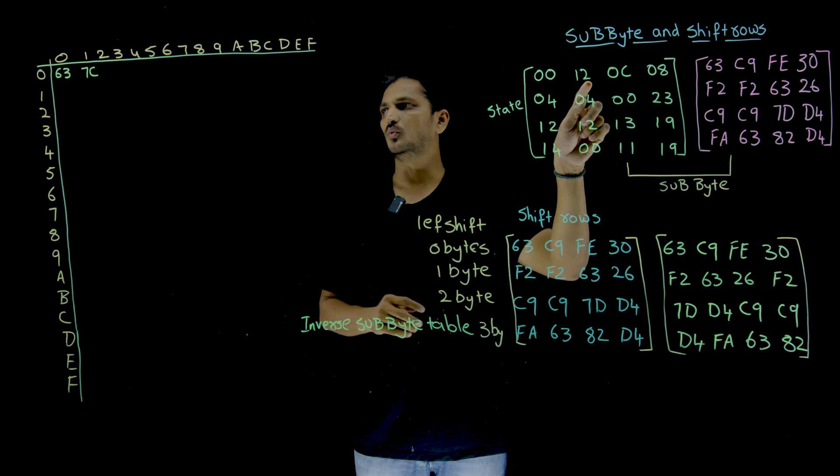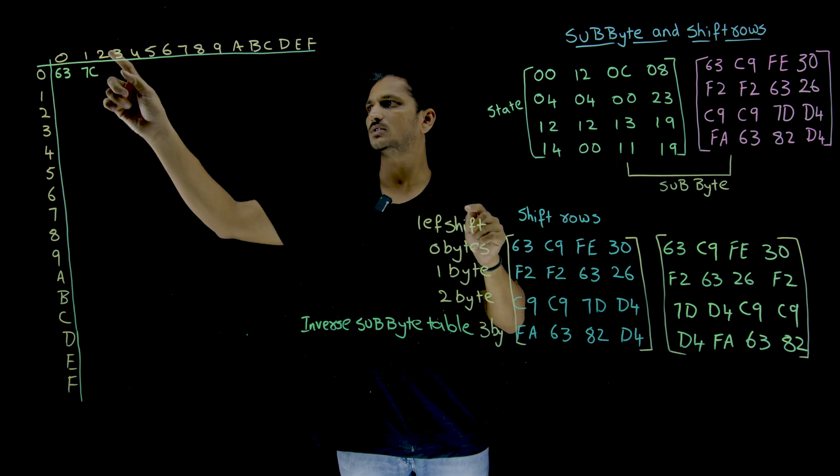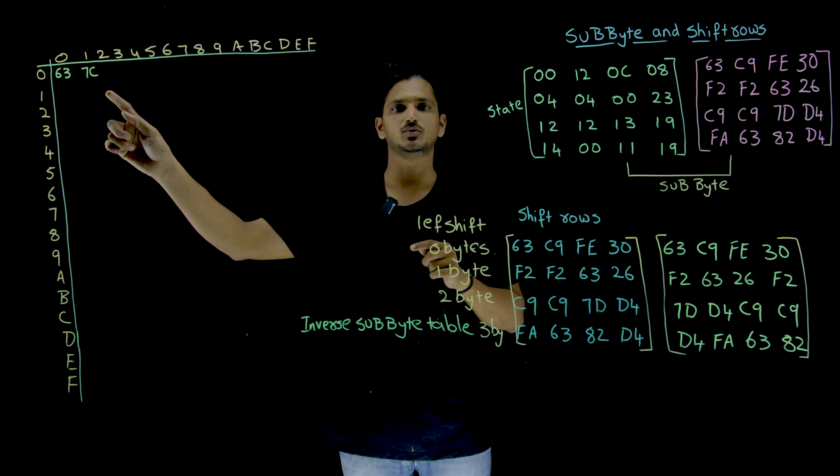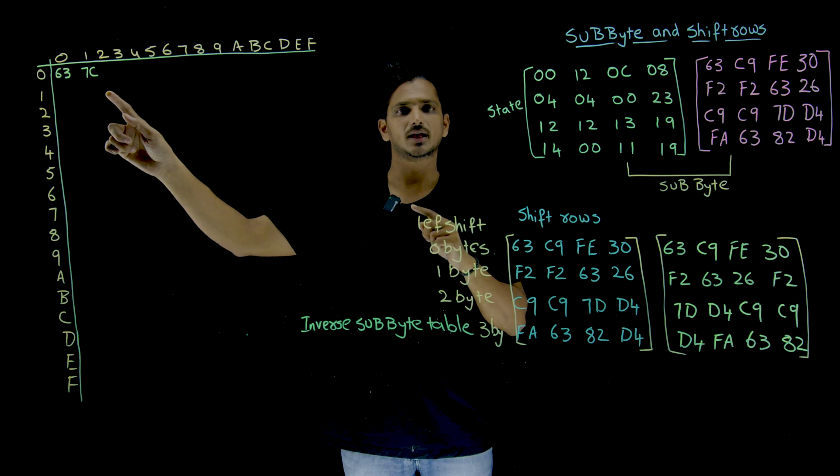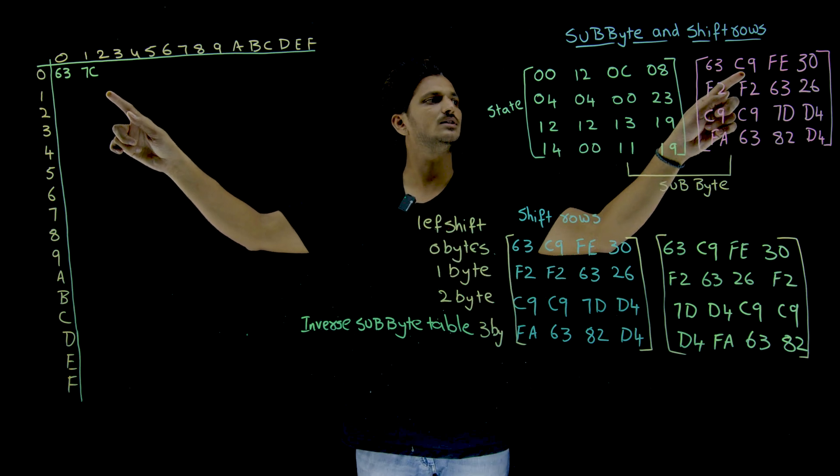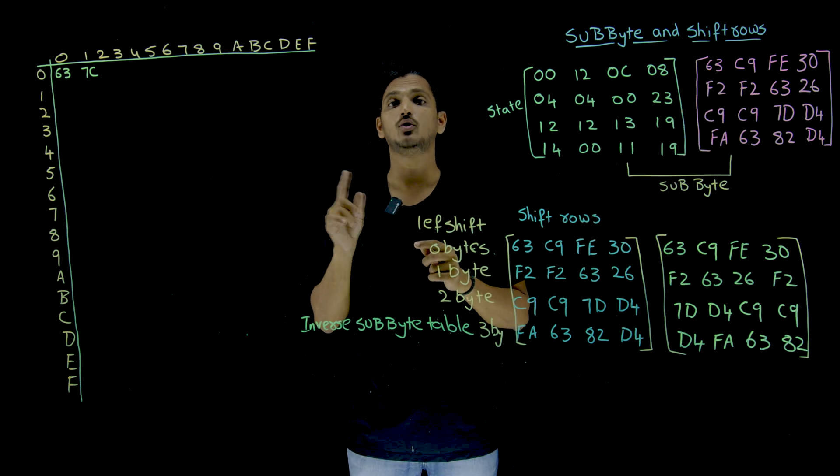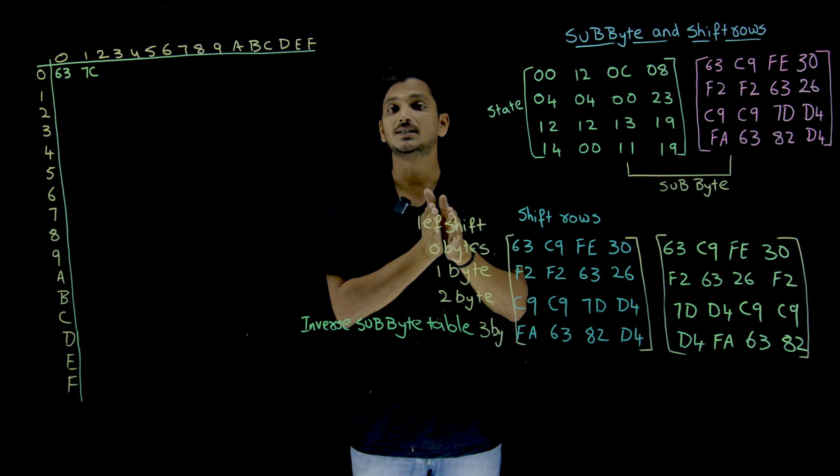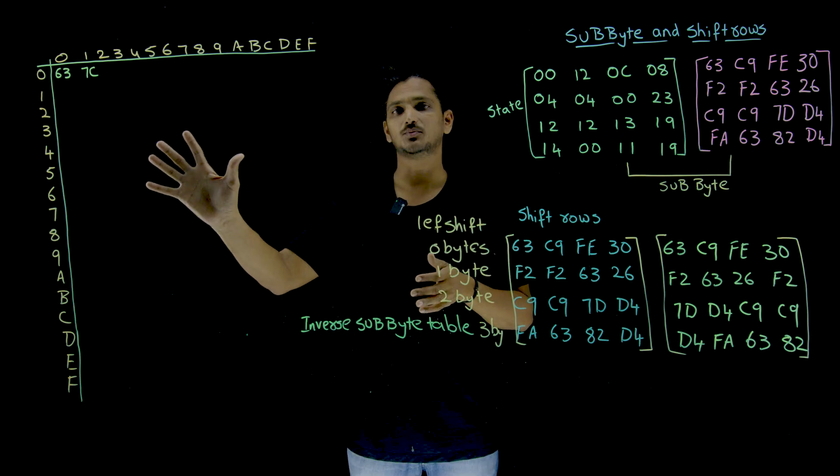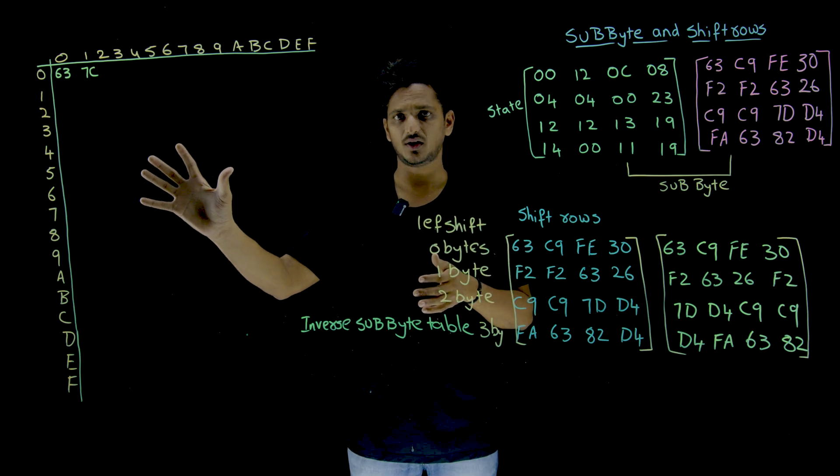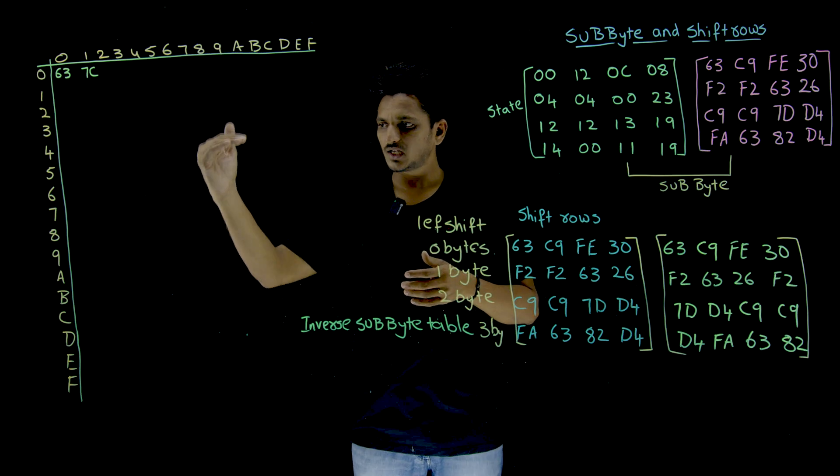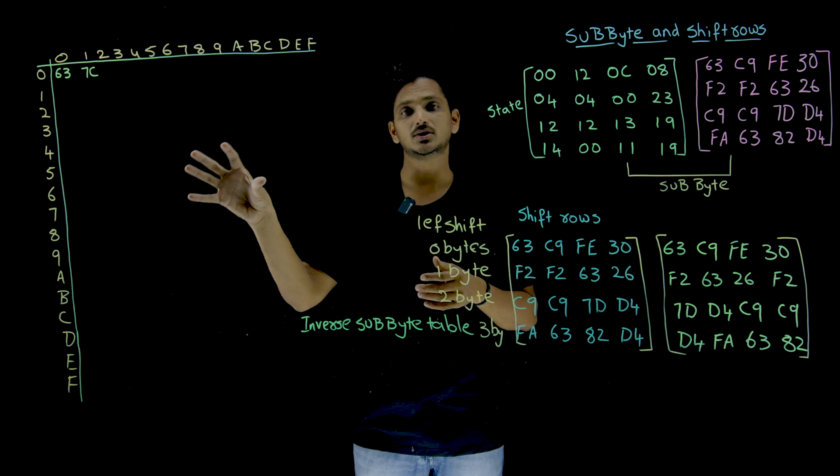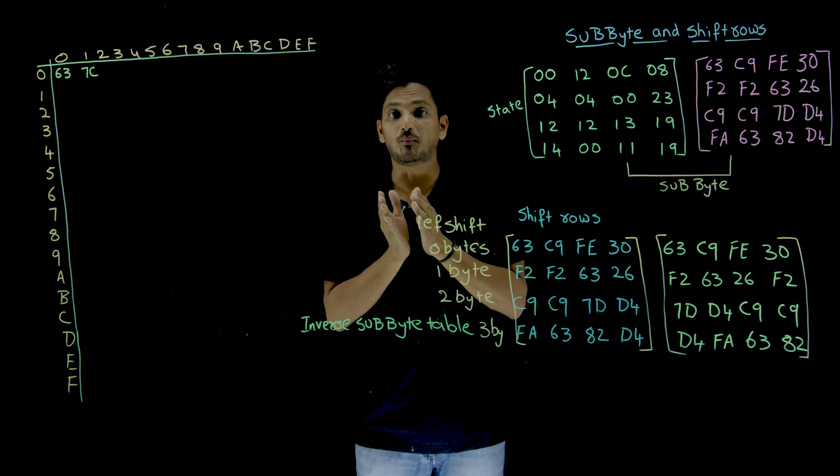Similarly, 1,2 - first row, second column. This is where you have to check. There it mentioned that 1,2 means C9. In place of 1,2 you have to substitute C9. This is what the substitution table. So during the encryption we are going to use this substitution table to do the byte substitution.